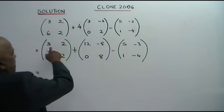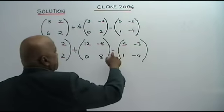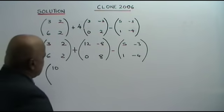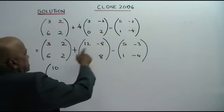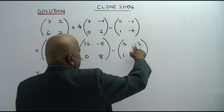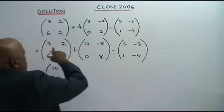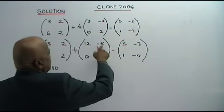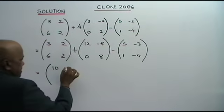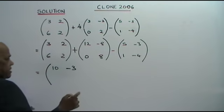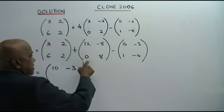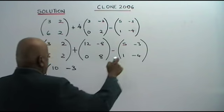3 plus 12 is 15, 15 minus 5 is 10. Next, 2 plus negative 8 is negative 6, negative negative positive means plus 3, so negative 6 plus 3 is negative 3. Correspondingly, 6 plus 0 is 6, minus 1 is 5.